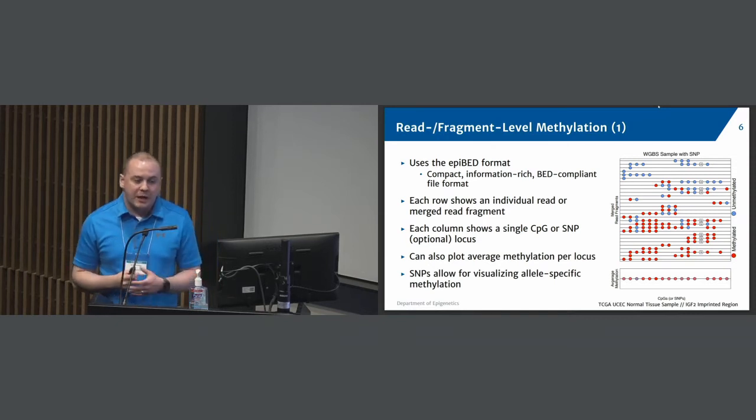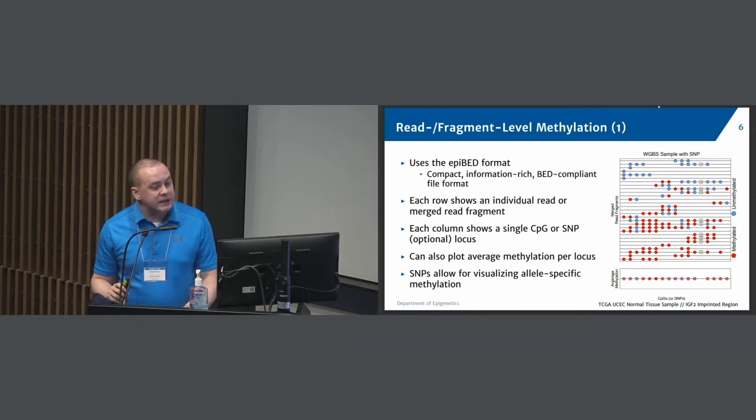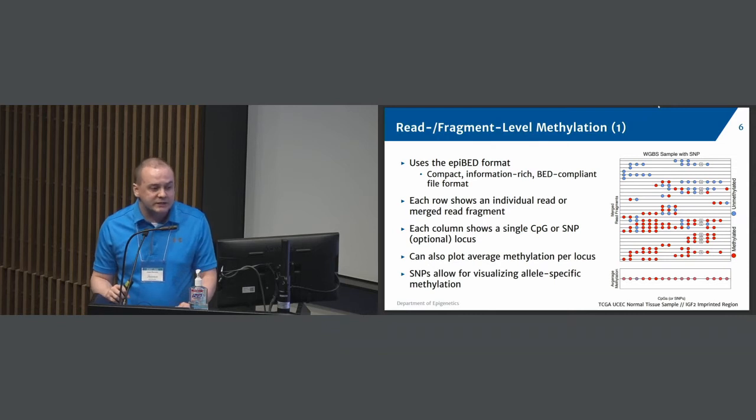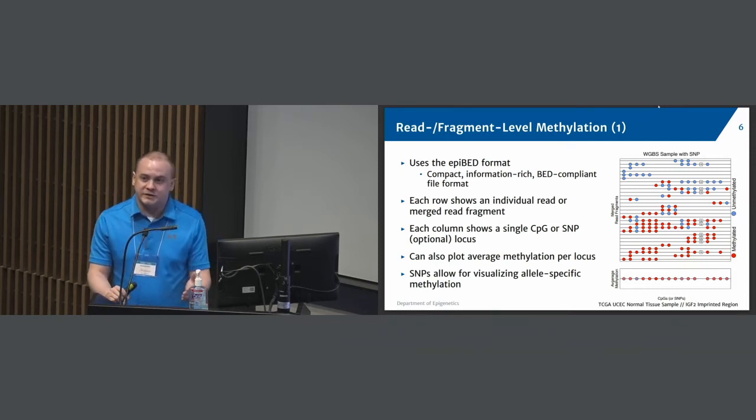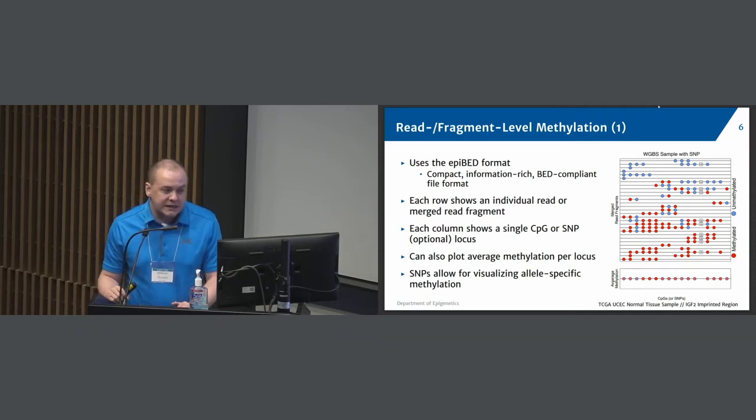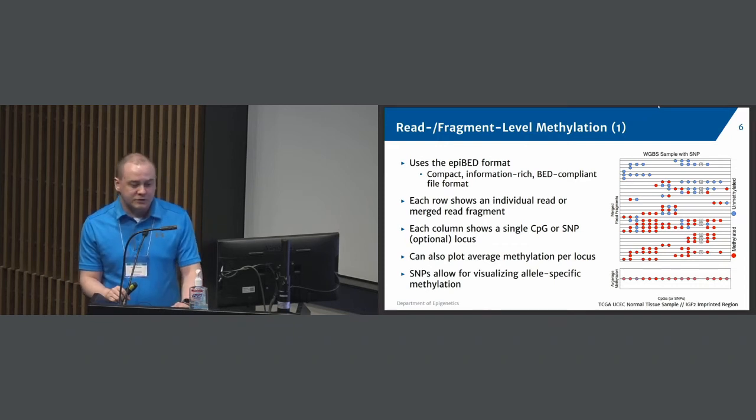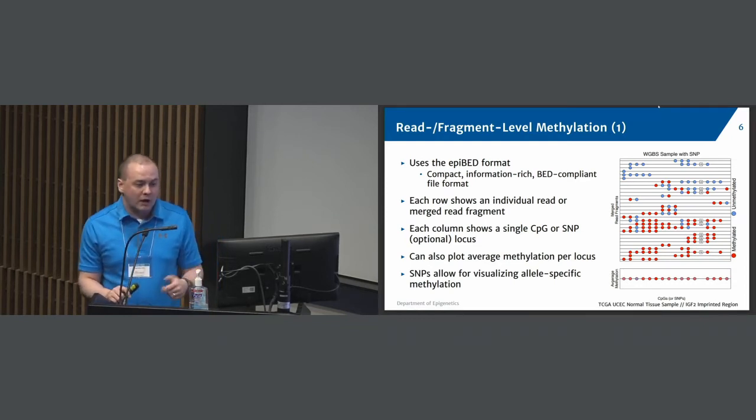And then we also have read and fragment-level methylation plots. And so these plots use what we call the EPI-BED format, which is a compact, information-rich, BED-compliant format file that we have developed at VAI in the Shen Lab. And what these plots do is each row here that you see is an individual read, or in this case specifically a read fragment, where for paired-end sequencing, you can combine the information that is correlated in that paired set of reads. And then each column here shows a single CPG in the genome, or a SNP, as is seen here. And then you can also plot the average methylation. So it'll average each column into the average value of the CPG methylation that you see there. And then by being able to visualize SNPs, you can see allele-specific methylation or epistates as well.